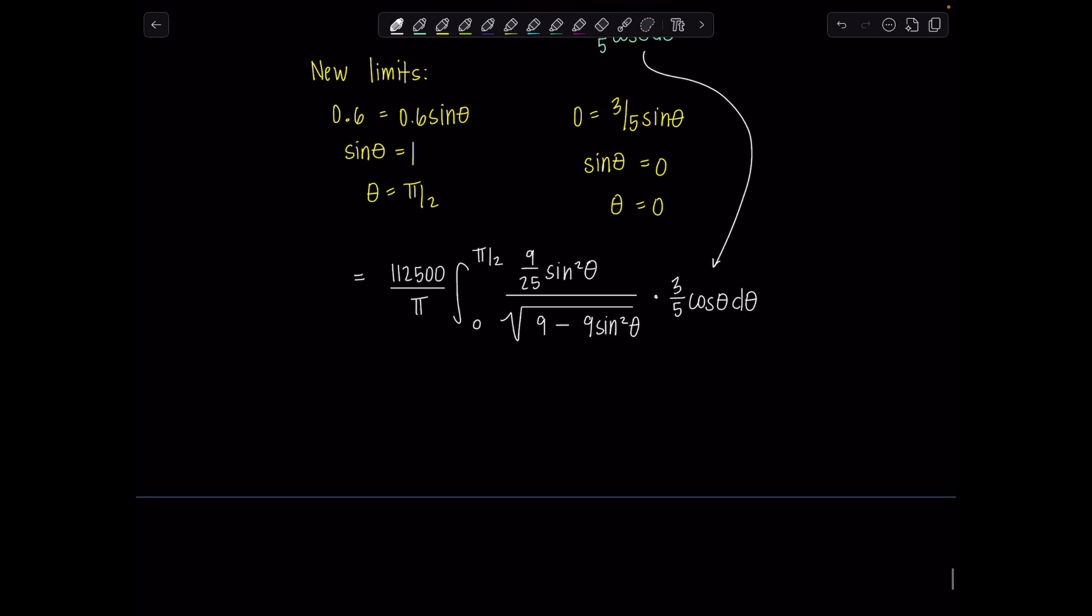This looks mildly disgusting, so let's start cleaning up. What I would do is take the constants, banish them outside. So we've got 112,500 over pi. Outside, we'll have 9 times 3, that's 27, over 25 times 5 is 125. Then we have 0 to pi over 2, sine squared theta, cosine theta, d theta, over square root of 9 times 1 minus sine squared theta.